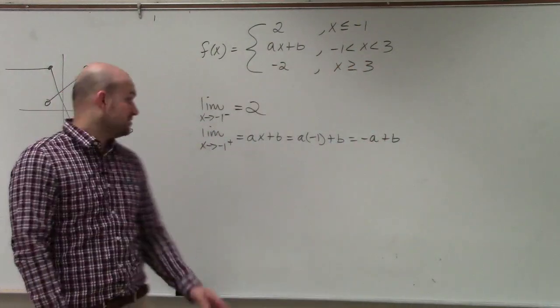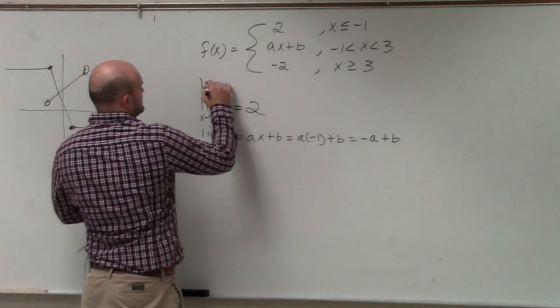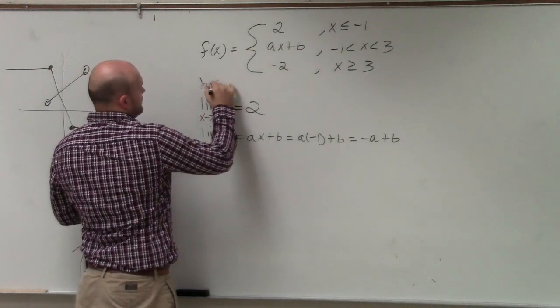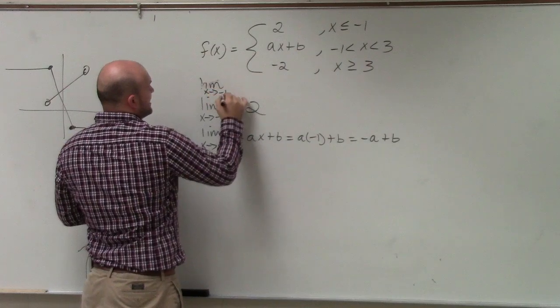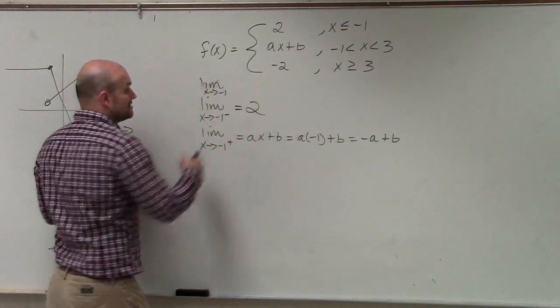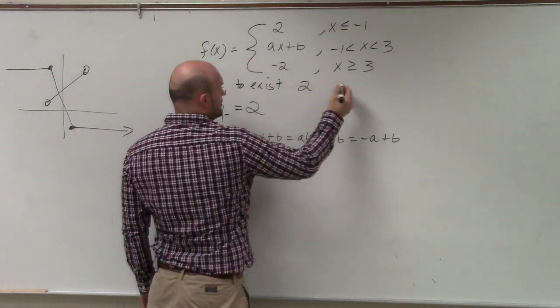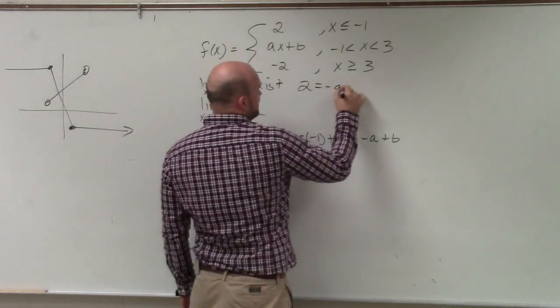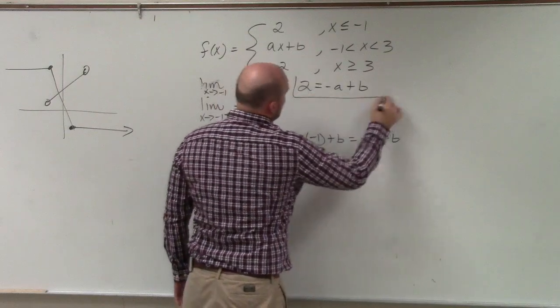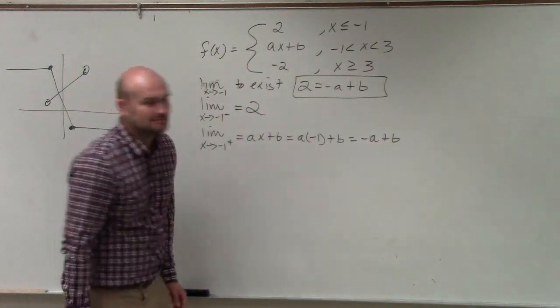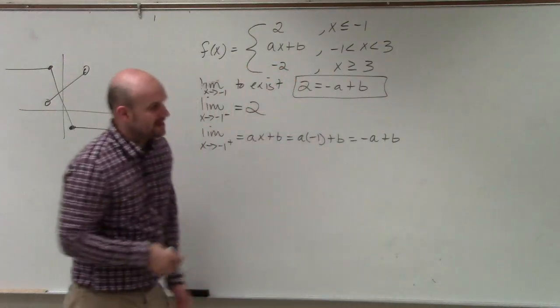Now again, for our limit, let me actually write this one. For our limit as X approaches negative one to exist, two has to equal negative A plus B. Right? We're just going to keep that. We're going to store that.